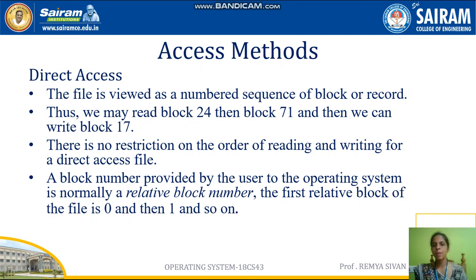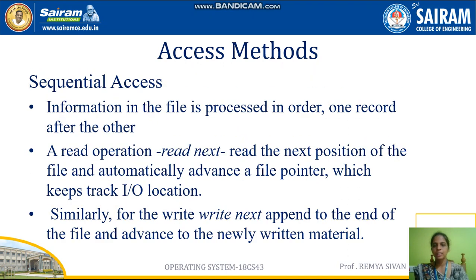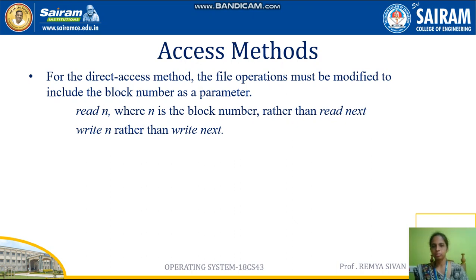The block number provided by the user to the operating system is normally a relative block number starting from 0. In sequential access, the read operation is 'read next' and the write operation is 'write next.' In direct access, 'read N' means go to the Nth block and read it — for example, 'read 50' goes to the 50th block. 'Write 100' means go to the 100th block and write it. We are not reading line by line; we read by block — whichever block you need, go to that block and read it.